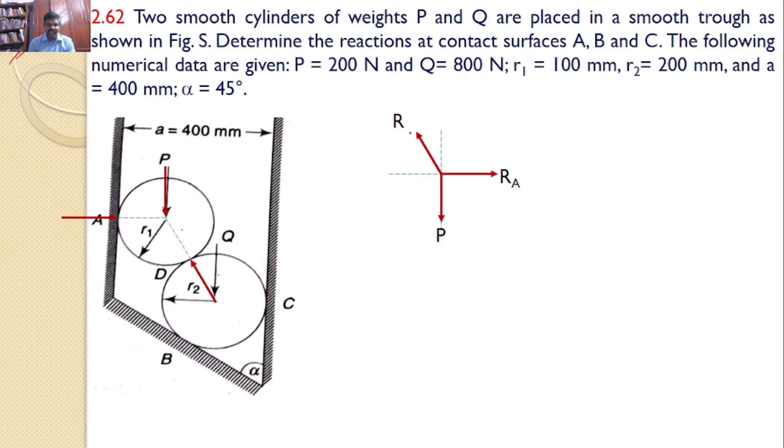R is an inclined force. Our interest is to find the angle made by R with either horizontal or vertical. For that, let us construct a small right angle triangle here. Let this makes an angle theta with the horizontal. Now, you can see this line. This line is nothing but R1 plus R2. You know that R1 is 100, R2 is 200. Hence, this line length is equal to 300.